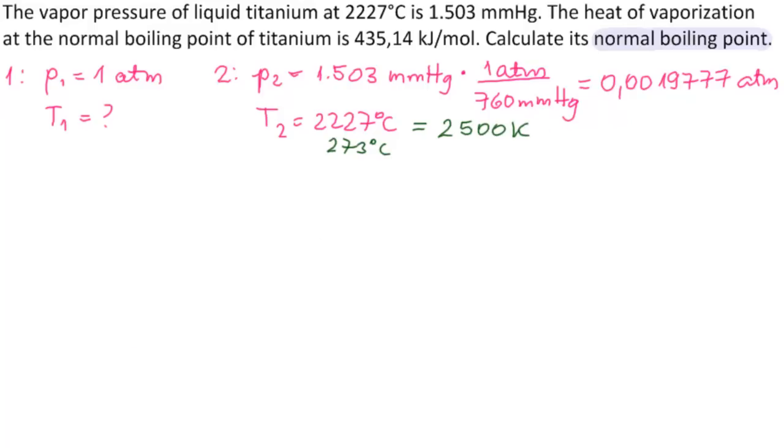We have one more piece of information here. The heat of vaporization at the normal boiling point of titanium. So heat of vaporization we denote by delta HV, and it is 435, that's kilojoules. So we'll just make it into joules right away. Joules over mole.